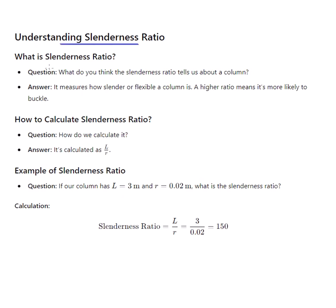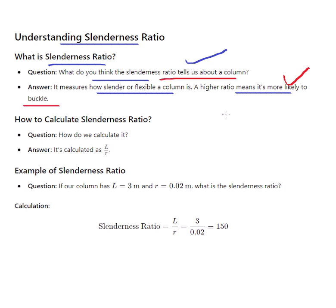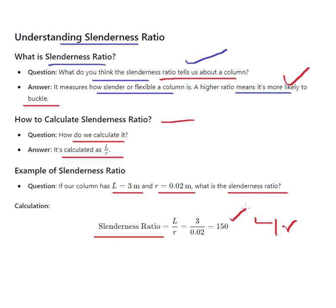Understanding slenderness ratio: the slenderness ratio tells us how slender or flexible a column is — a high ratio means it is more likely to buckle. We calculate it as L/R. For example, if the column is 3 m and R is 0.02 m, the slenderness ratio is 3 / 0.02 = 150. A slenderness ratio of 150 indicates the column is more likely to buckle.